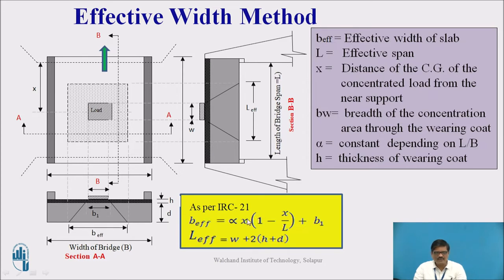B Effective is determined as per IRC 21. B Effective is given as alpha into x in bracket 1 minus x by L plus B1. Let us try to understand what are the meaning of these terms: alpha, x and B1.